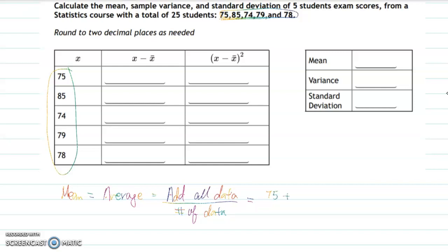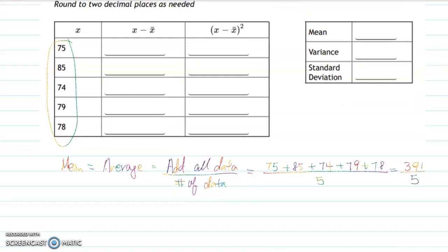To find the mean, add all the data: 75 plus 85 plus 74 plus 79 plus 78. Count the data - one, two, three, four, five - so divide by five. You will get 391 divided by 5, which equals approximately 78.2. So that's your mean value.